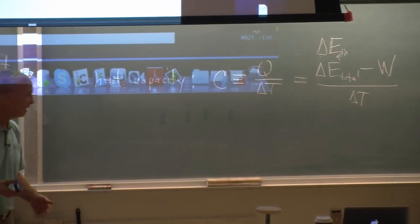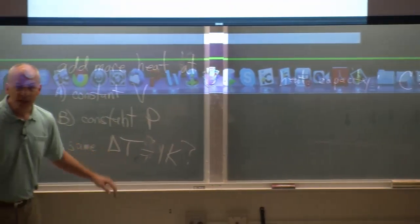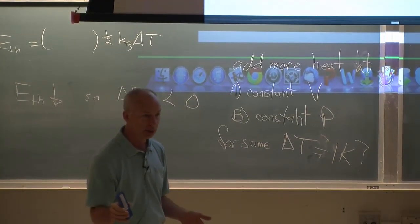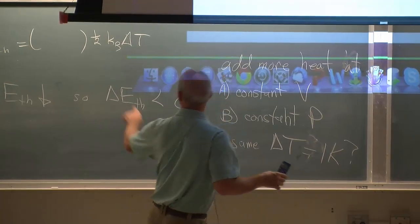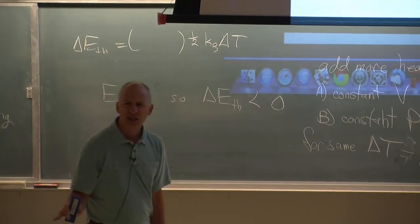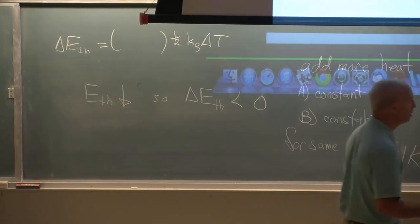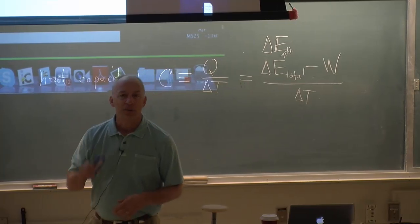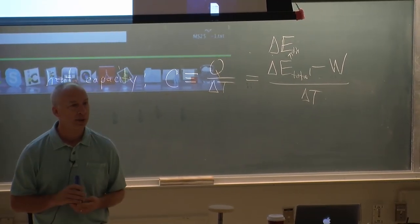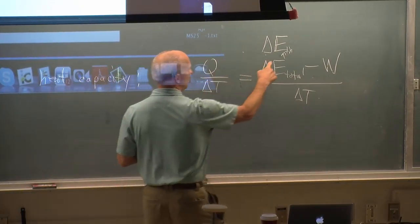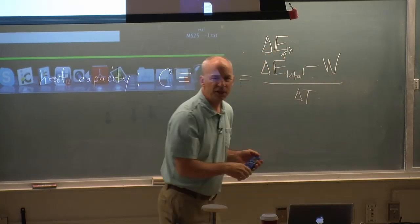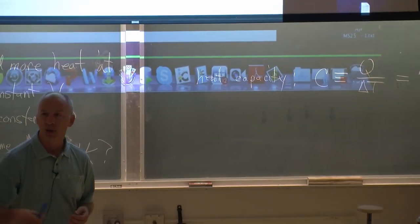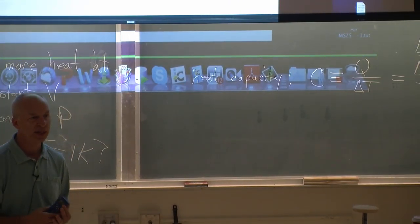If delta T is the same, and our substance hasn't changed, so the number of modes is the same, then delta E thermal is the same for both cases. But in one of them, work energy came out. So since Q is delta E thermal minus W, because work energy came out of one of them, we must have had to put more heat in to get the same delta E thermal.